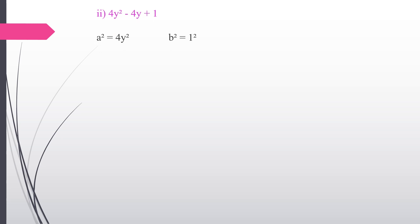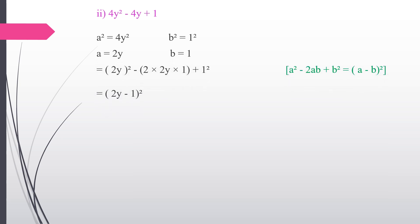Second subdivision: 4y² − 4y + 1. Here a² = 4y², so a = 2y, and b² = 1, so b = 1. We use the identity a² − 2ab + b² = (a − b)². Applying: (2y)² − 2(2y)(1) + 1² = (2y − 1)². The answer is (2y − 1)².